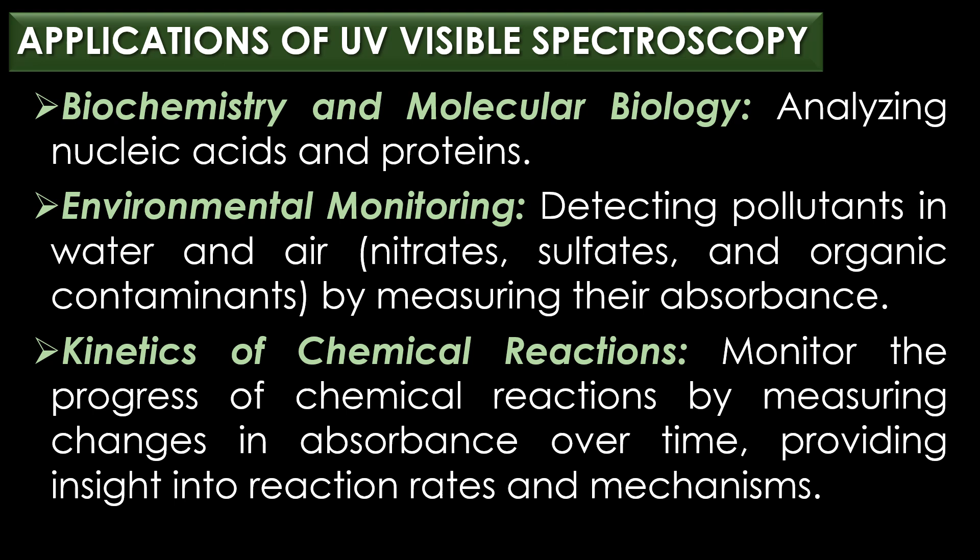UV-visible spectroscopy is used for analyzing nucleic acids like DNA and RNA, and proteins. The fifth application is environmental monitoring: UV-visible spectroscopy is used for detecting pollutants in water and air, such as nitrates, sulfates, and organic contaminants, by measuring their absorbance.